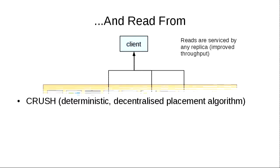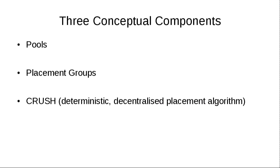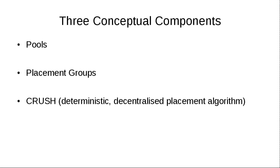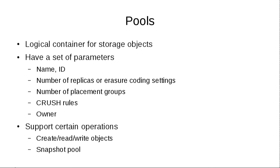Underlying this are three conceptual components: pools, placement groups, and CRUSH. Pools are a logical container for storage objects and they have a set of parameters. They have a name which you care about, an ID that you don't care about because that's internal to RADOS, settings like number of replicas or erasure coding settings, a number of placement groups, CRUSH rules, an owner, and some other things. Within a pool you can create, read, and write objects, and you can snapshot the pool.